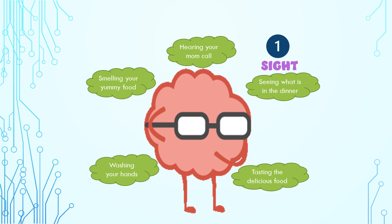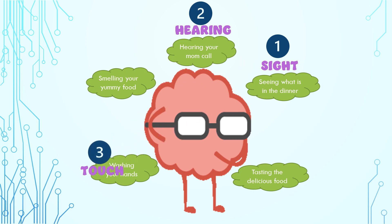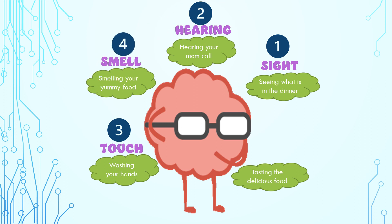When you saw what is in the dinner, you used the sense of sight. When you heard your mother's call, you used the sense of hearing. When you washed your hands and felt the water, you used the sense of touch. And when you smelled your delicious food, you used the sense of smell. And finally, while tasting the delicious food, you used the sense of taste. So, these are the five basic human senses: sight, hearing, touch, smell, and taste.